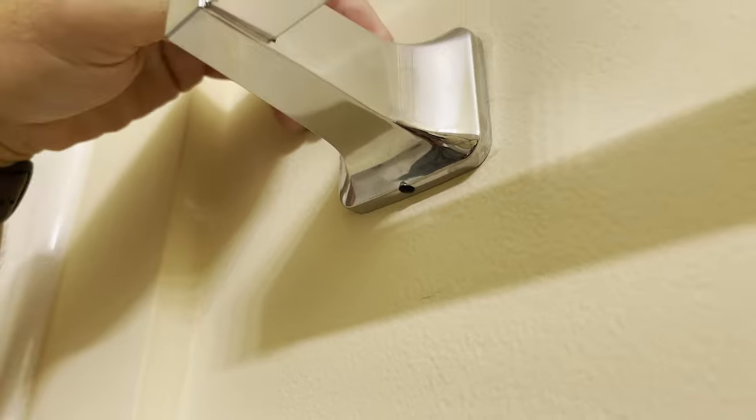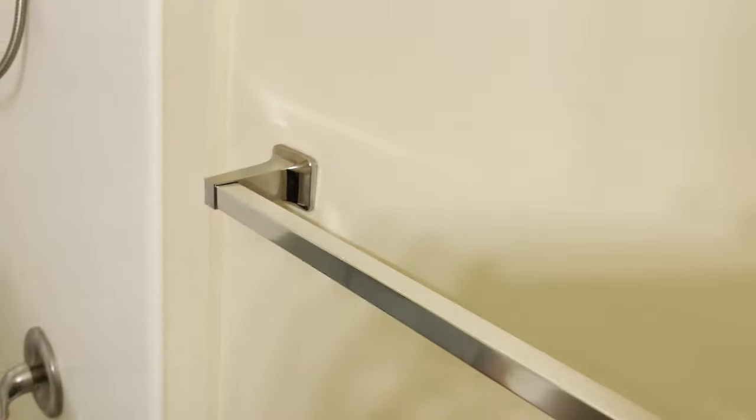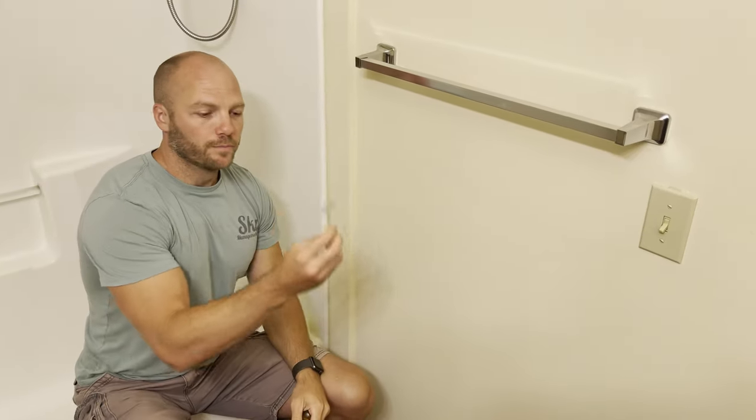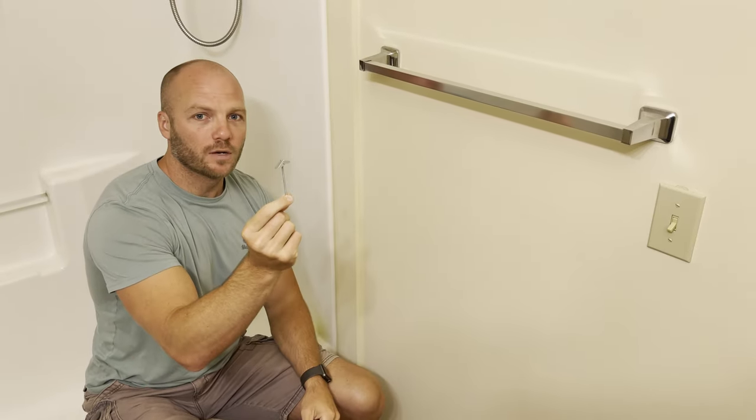If it's still all loose after you get that screw tight, then the bracket is probably loose up against the wall. So to fix that problem, we're going to remove this part and put a toggle bolt into the bracket.